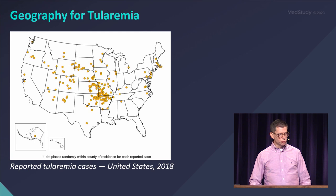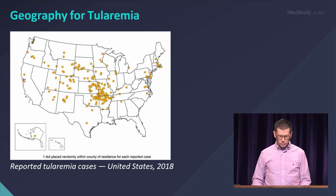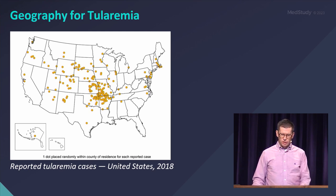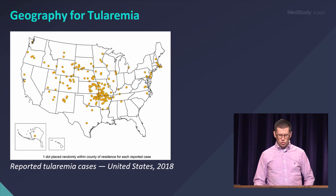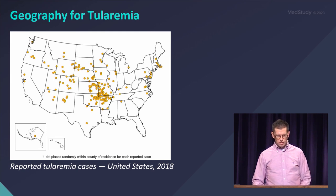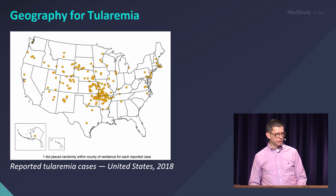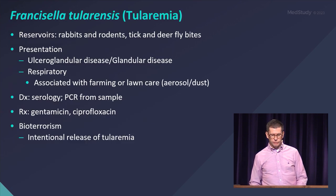For tularemia, think about geography — the Arkansas, Missouri, Kansas, Oklahoma area, which looks similar to Ehrlichia and Rocky Mountain spotted fever. Geography is always an important clue.